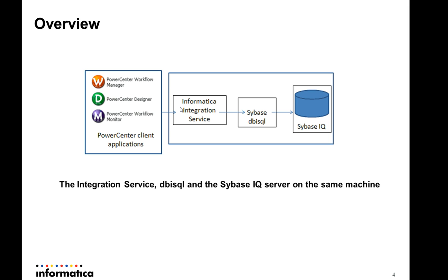This diagram depicts how we can have Informatica Integration Service, DBI SQL, and Sybase IQ server on the same machine. With this setup, load performance is faster. The output files are used by the IQ loader and targeted into a directory on the same machine. This configuration is easily configurable and we can also use a staged flat file or a pipe to load data into Sybase IQ loader.